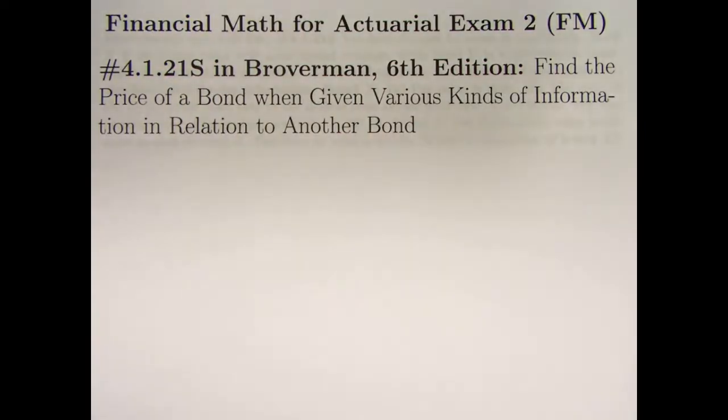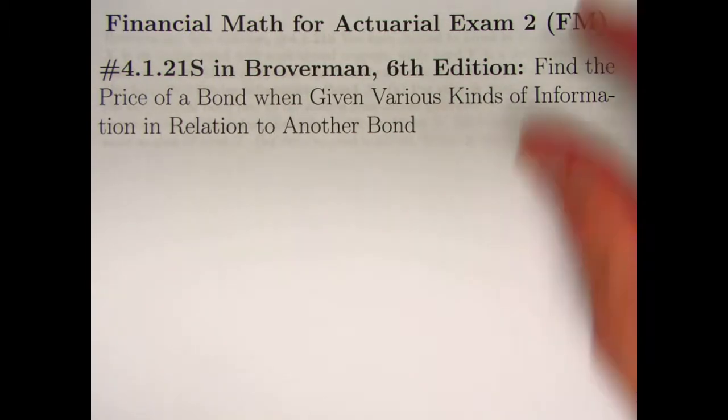It's the first problem in chapter 4, the first problem on bonds that is an old actuarial exam problem as indicated by the S. We're going to be finding the price of a bond when we are given various kinds of information in relation to another bond. There really is no better way to describe this problem. It's a lot of miscellaneous information.